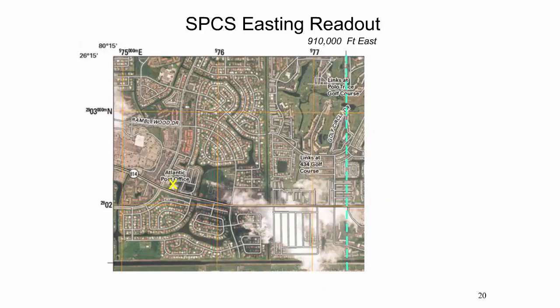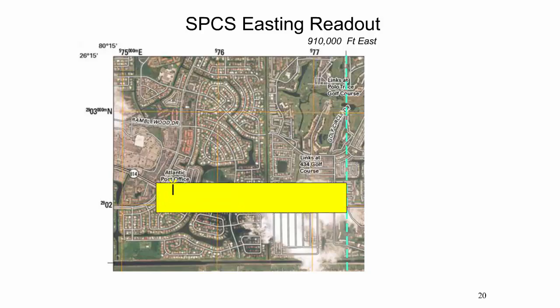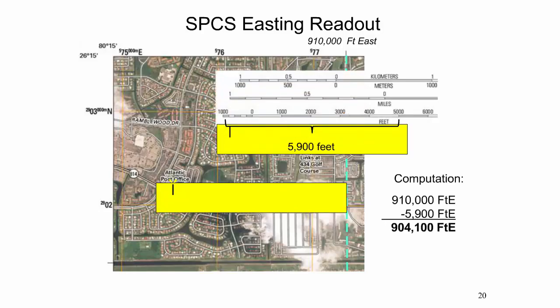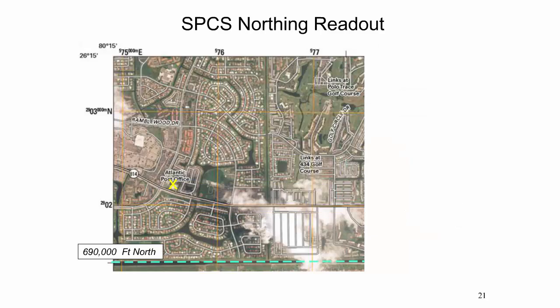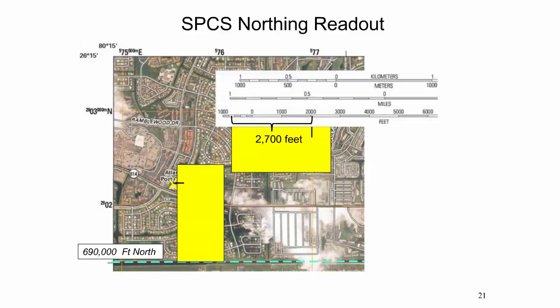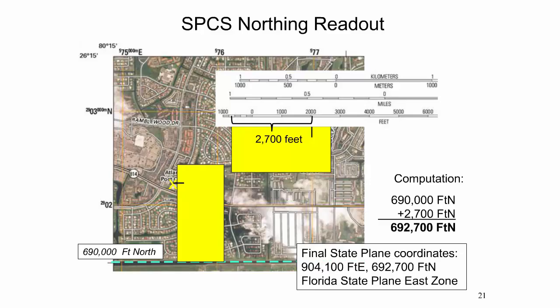To determine the easting coordinate, first find the easting of a nearby vertical state plane grid line — for the post office, the nearest grid line is at 910,000 feet east. Align a sheet of paper with the grid line, mark the distance to the point, then check against the feet scale bar where each subdivision on the left is 200 feet long. In this example, the ground distance measures as 5,900 feet, which after subtraction from the easting value gives an easting of 904,100 feet. The north coordinate is obtained similarly: the distance between the post office and the nearby 690,000 foot horizontal grid line is measured as 2,700 feet, and adding this value gives a northing of 692,700 feet.